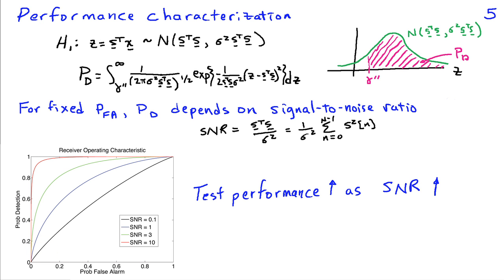The likelihood ratio test is the optimal test for simple hypotheses. For binary simple hypotheses, the highest probability of detection for a given false alarm probability is achieved by using a likelihood ratio test.